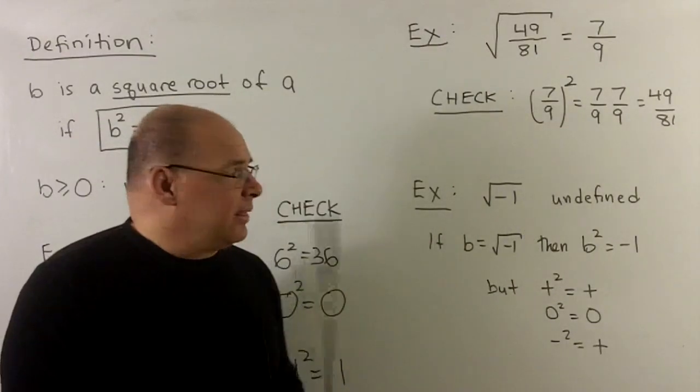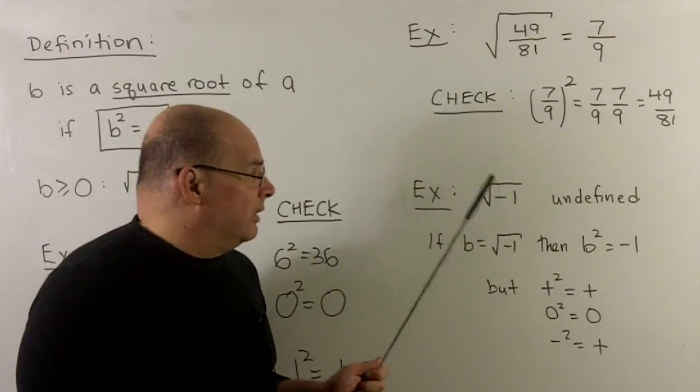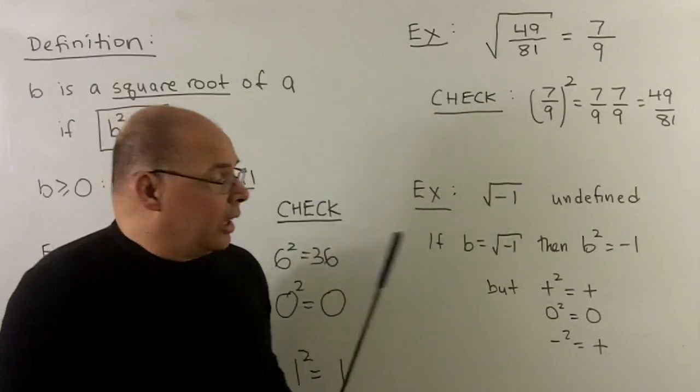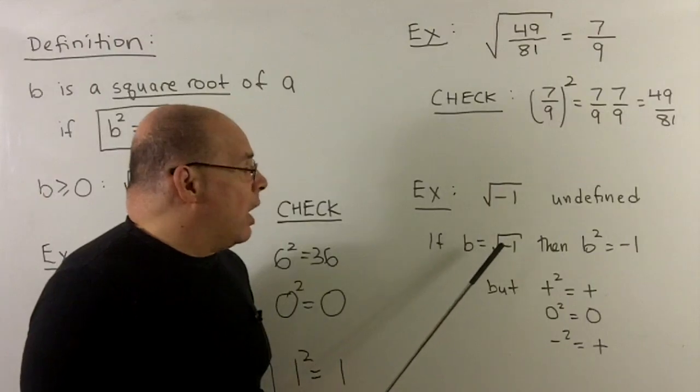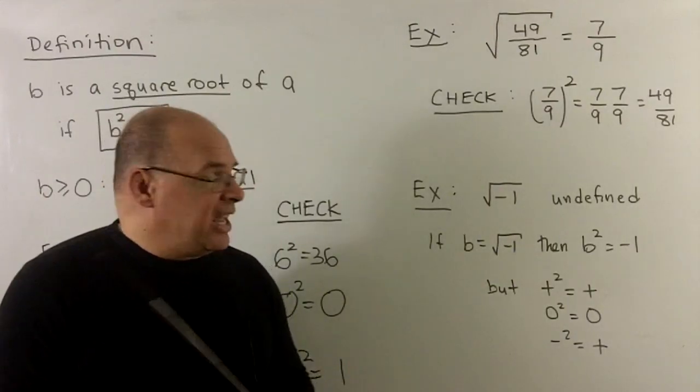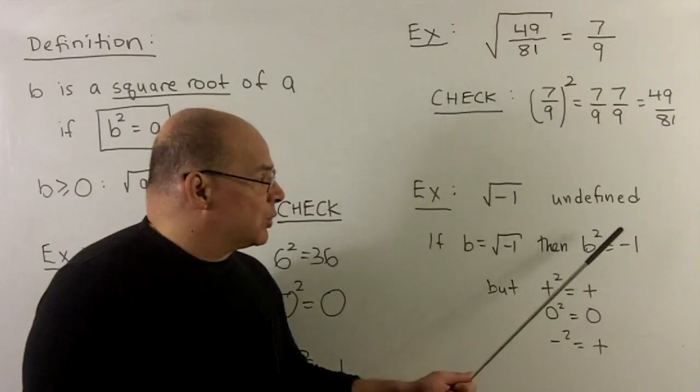Now why do we expect this not to produce something meaningful? Let's take a look. So if I just give this a name, b equal to square root of minus one, then the definition that we're using is going to say that b squared has to be equal to minus one.